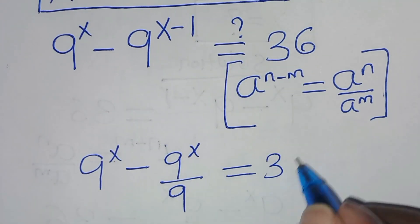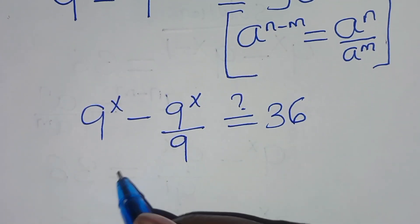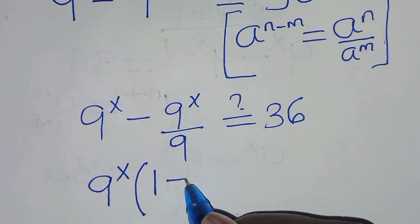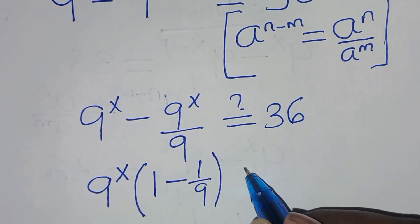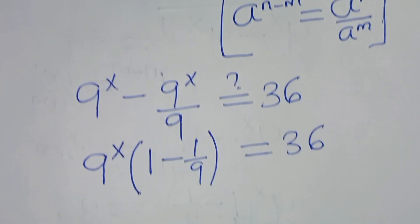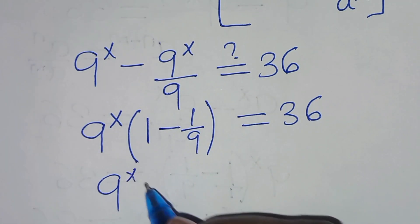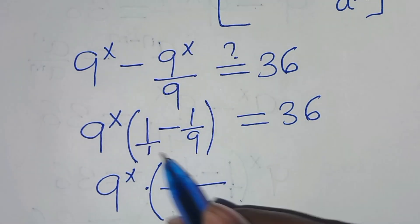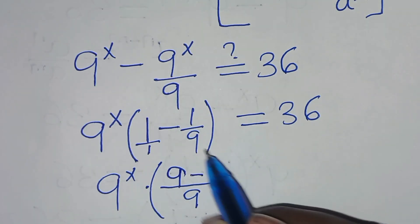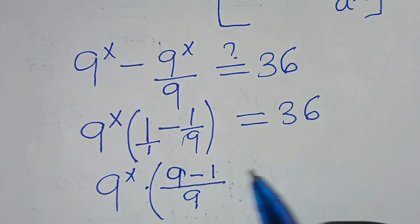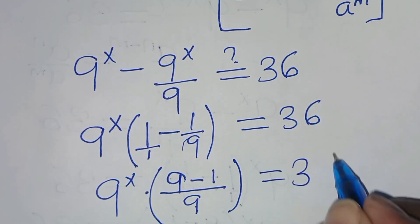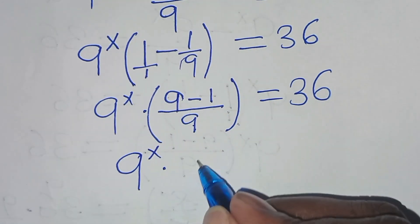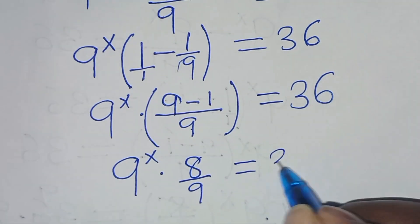We have that 9 to the power of x is common, so we factor out 9 to the power of x, giving 1 minus 1 over 9, equal to 36. With LCM equal to 9, we have 9 to the power of x times (9 minus 1) over 9, equal to 36. Simplifying: 9 to the power of x times 8 over 9 equals 36.